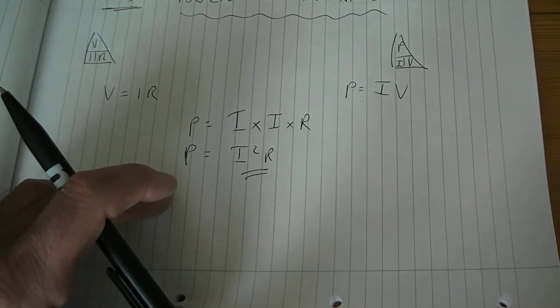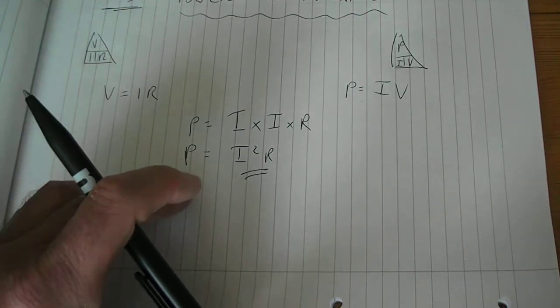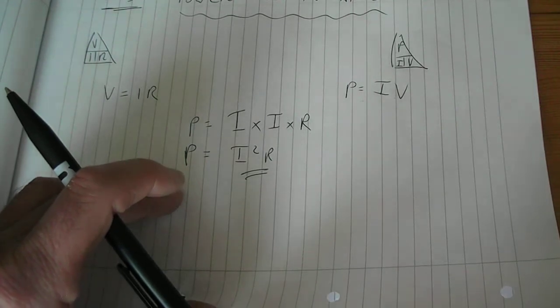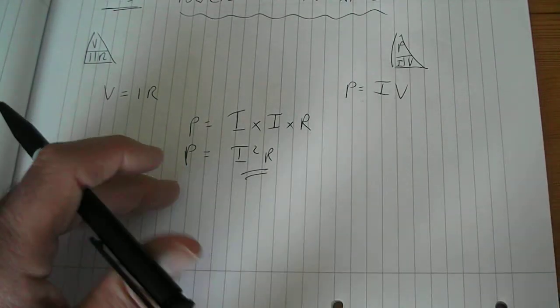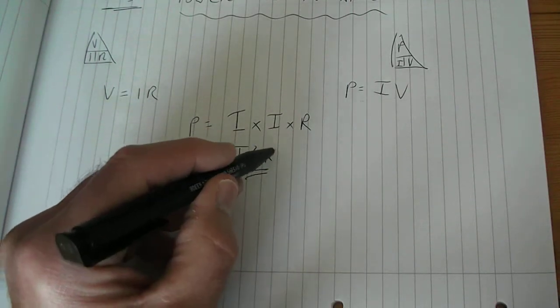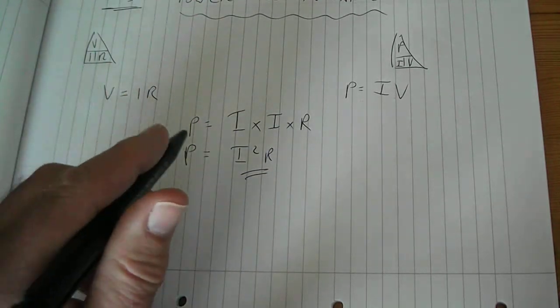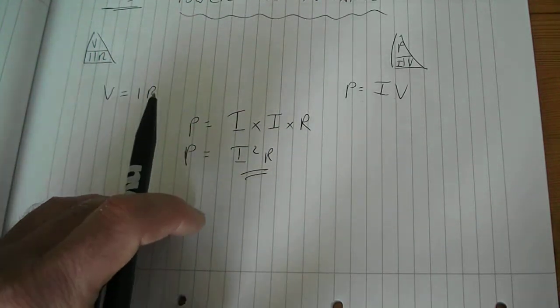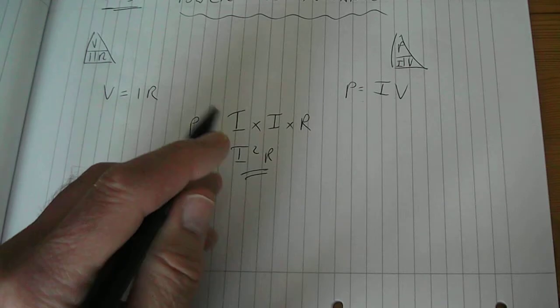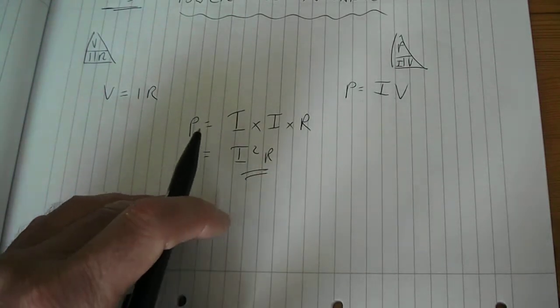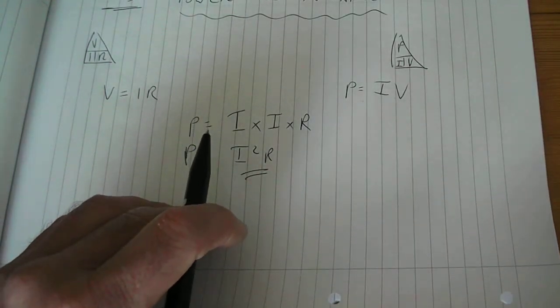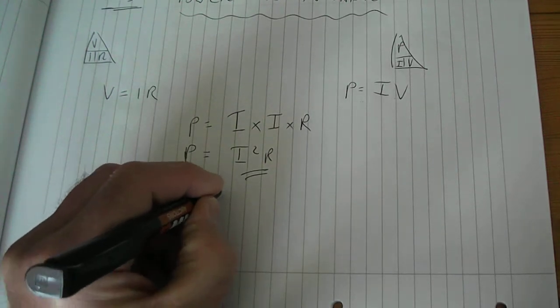It can explain losses in copper windings. If we know the current that's going through a winding and we know its ohmic resistance, we can work out how much power is going to be lost in that winding. So it's an extremely important and very useful formula, I squared R.